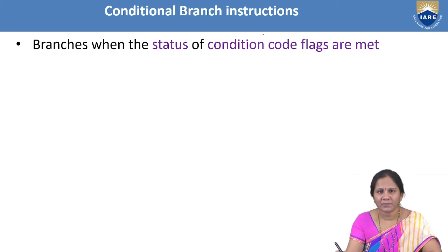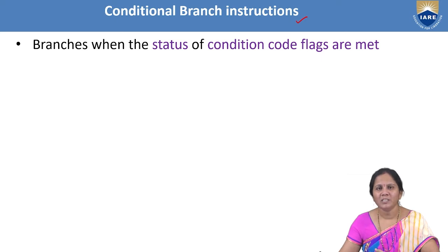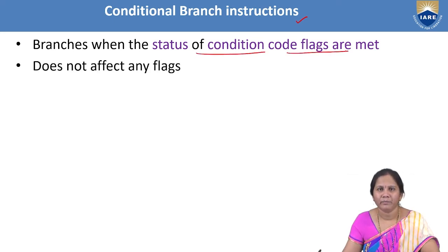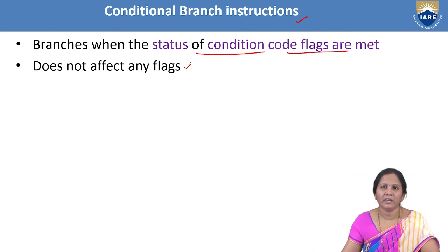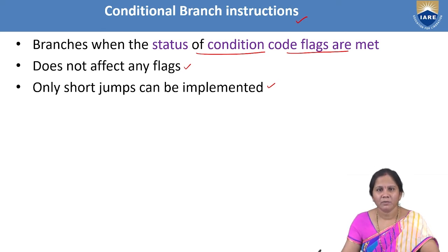Coming to the next classification: Conditional Branch Instructions. These mean the control will branch to the specified address only when the condition is met — that is, when the flag status condition is met. When these instructions are executed, they do not show any effect on the flags. Only short jumps can be implemented using conditional branch instructions, meaning the displacement must be within the same segment.